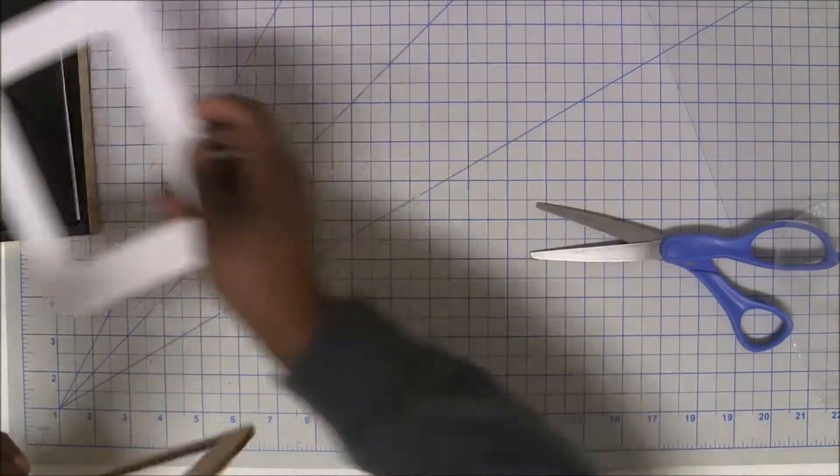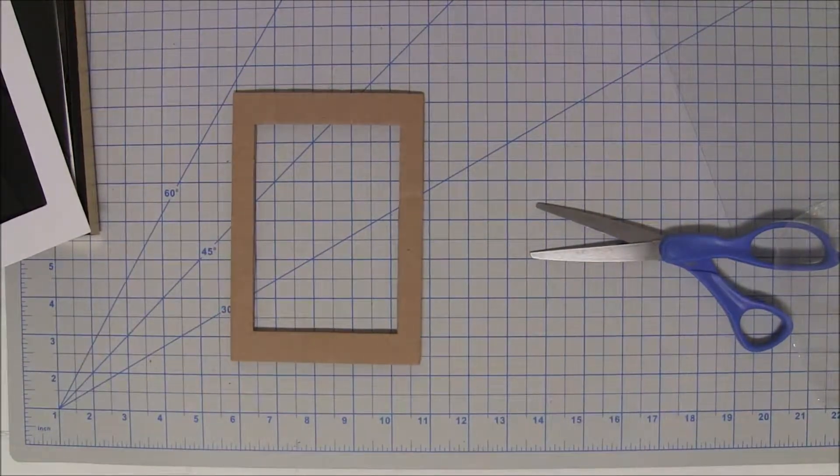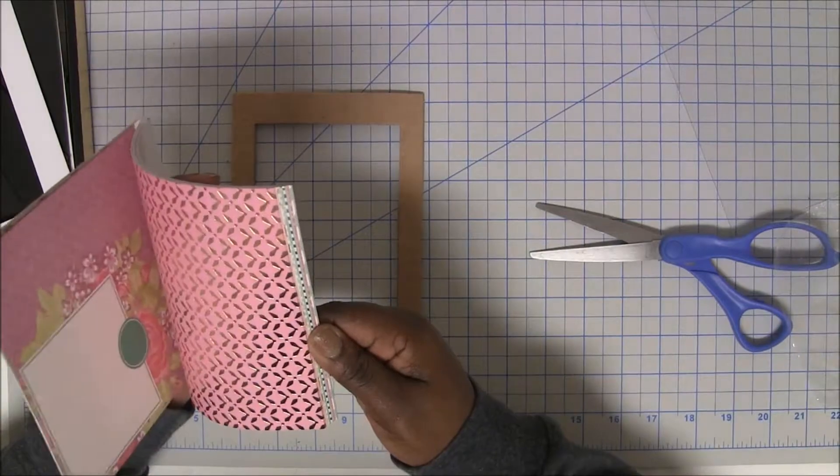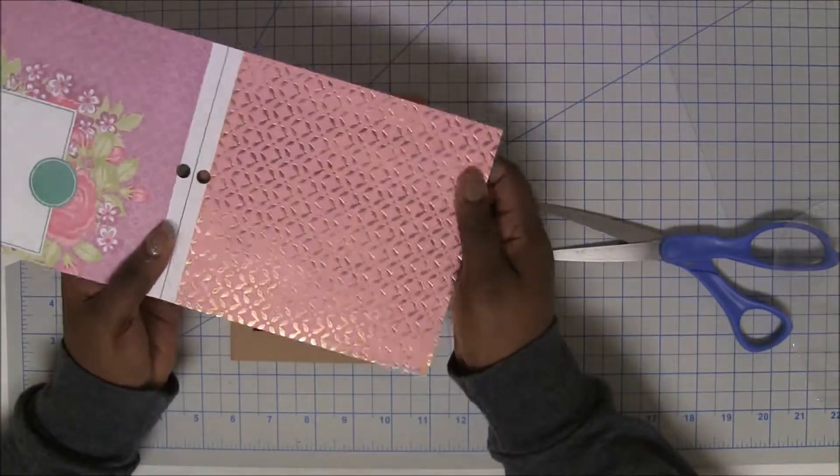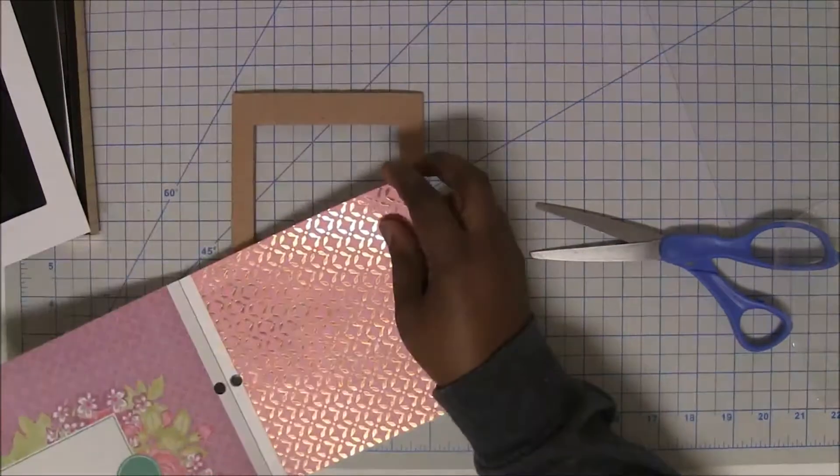I'm going to have us use this part to cut out our paper. So let's pick a piece of paper. That's kind of pretty. I don't know, I wonder if the gold will clash. Well, you know what, let's do it.